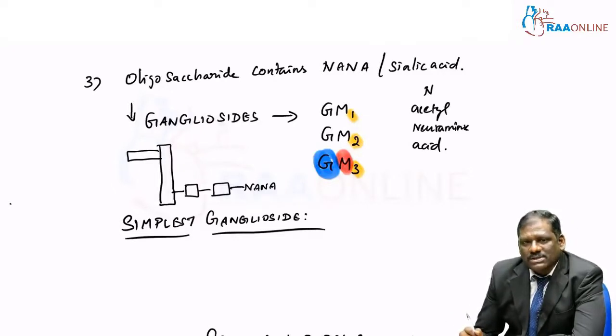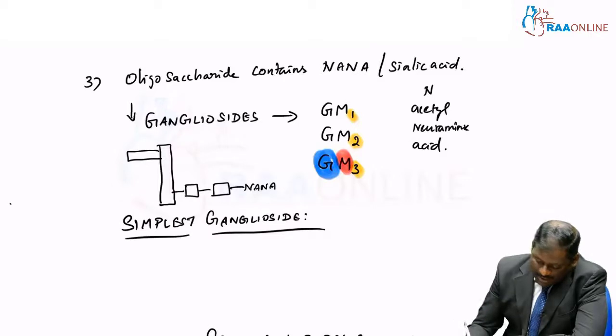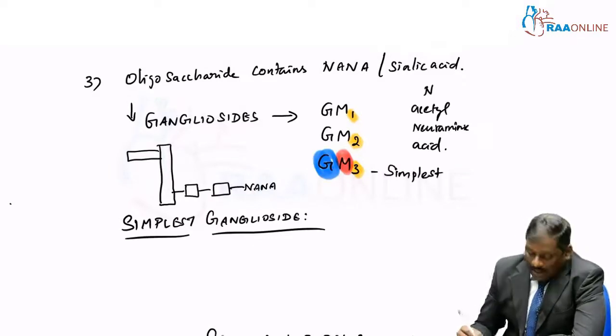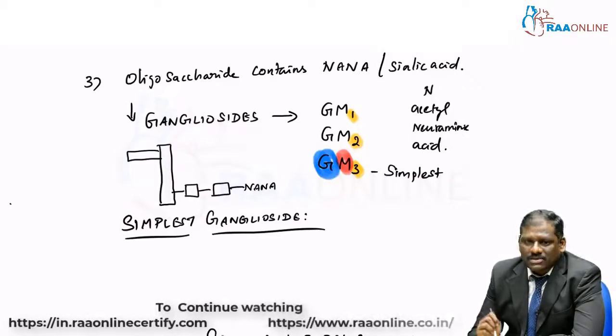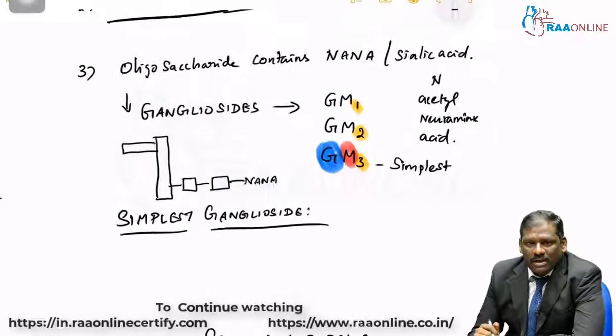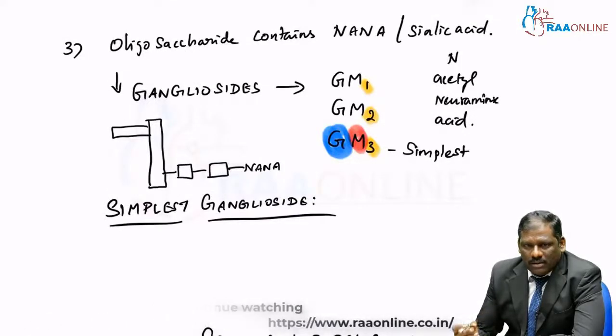Guess what? Which one is the simplest ganglioside among these three? The simplest ganglioside is GM3 ganglioside. And GM1 ganglioside will be the most complex ganglioside. And this ganglioside actually acts as a receptor for cholera toxin in your intestines. These gangliosides usually act as receptors, and this GM1 is a specialized receptor for receiving the cholera toxin in your intestines.